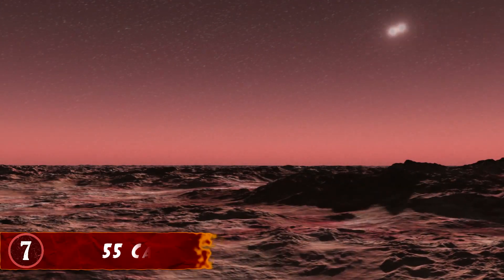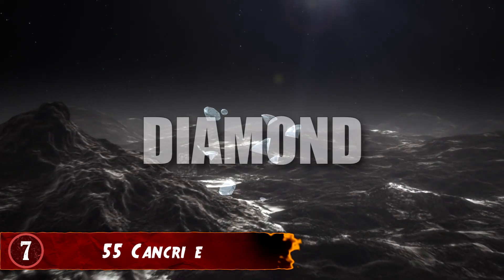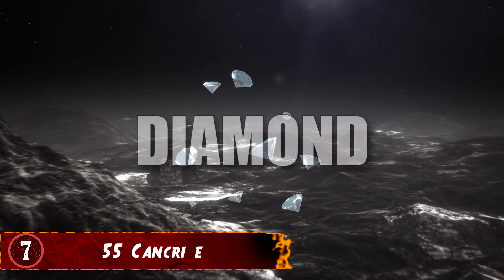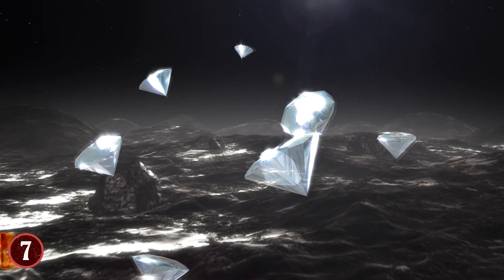Number 7: 55 Cancri-E. Planets are very much defined by what they're composed of. And for 55 Cancri-E, that's diamond. Yes, this is a literal planet that is made of literal diamonds. So, how did this come to be?